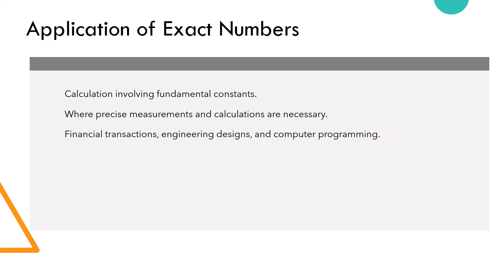So, to wrap our discussion, exact numbers are values that are known with complete certainty, expressed without any approximation or rounding. Therefore, the number of significant digits in exact numbers are infinite. They are important in fields like mathematics, science, finance, and engineering where precision is crucial.